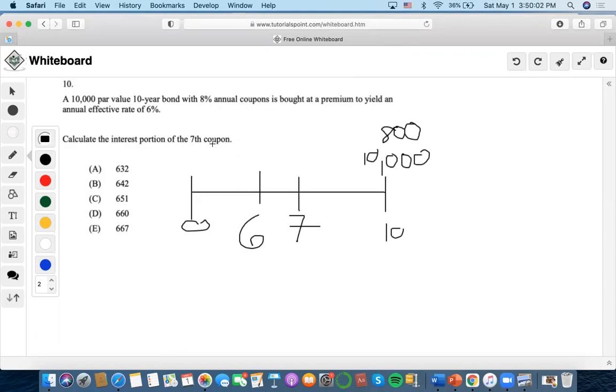The rule in finding the interest portion at any time value is that we would have to always find the outstanding balance or value of the bond at the time prior to the time that this question is looking for.